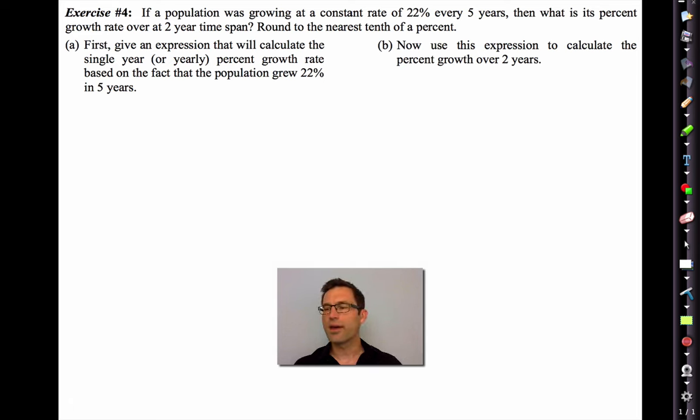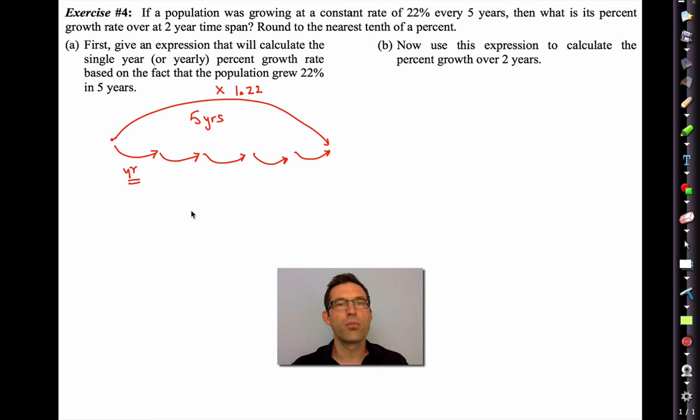Well, keep in mind the idea. After five years, we get to multiply by 1.22. That means every year we're multiplying by 1.22 to the one-fifth. So this is your yearly multiplier. I don't even need to know what it's equal to. In fact, I don't want to know what it's equal to. That's what I multiply by every year.